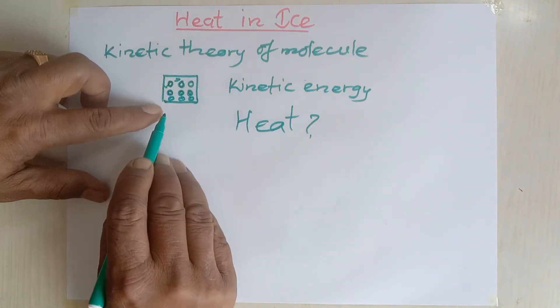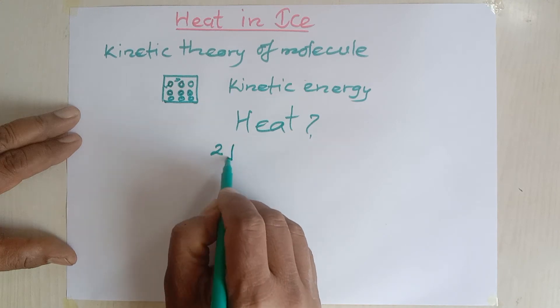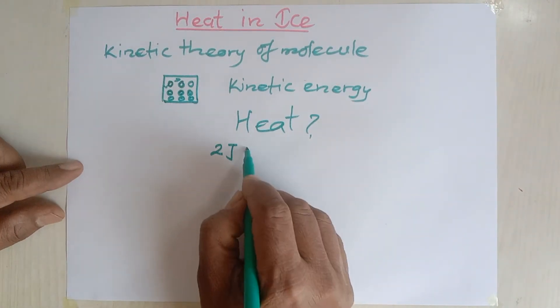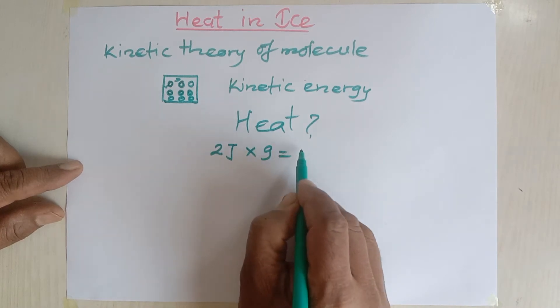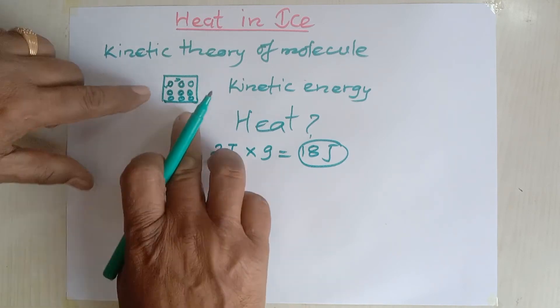It means if a body has, look at this, nine molecules, and each of the molecules contains two joule kinetic energy because they are vibrating, then nine molecules contains 18 joule heat energy.